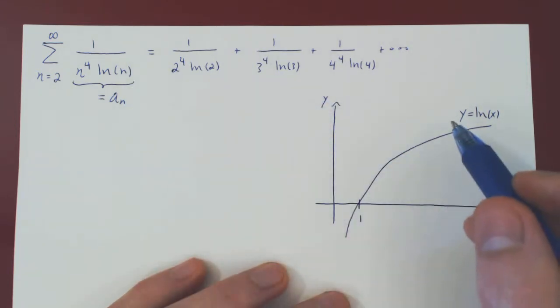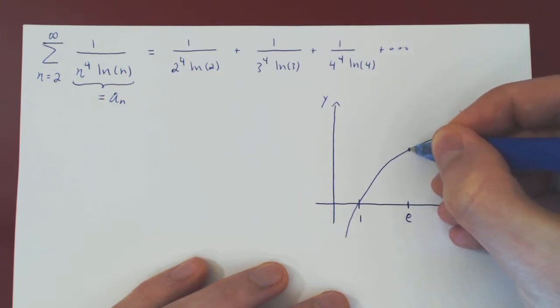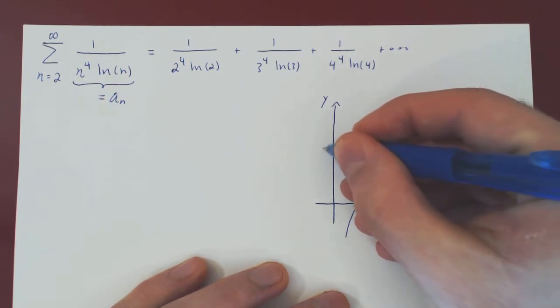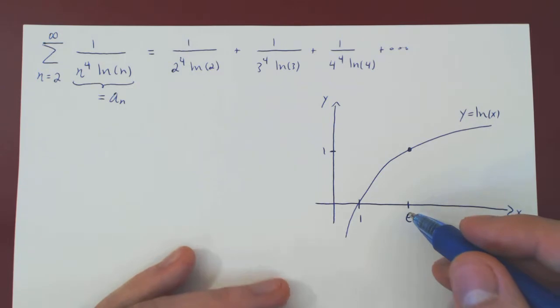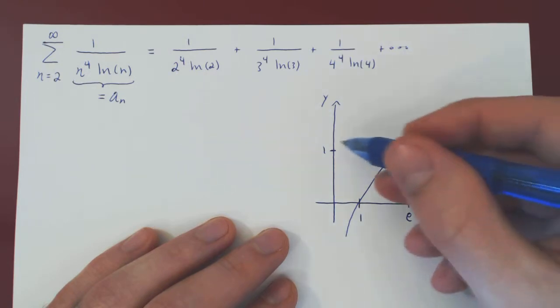And when is ln equal to 1? We know that ln of e equals 1. And e is approximately 2.7. So it means that beyond 3, ln becomes larger than 1.